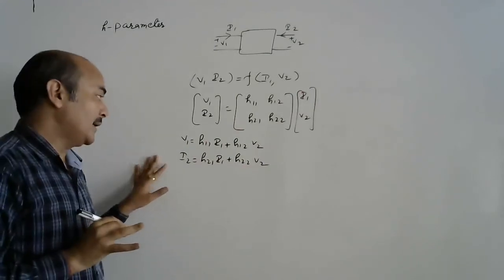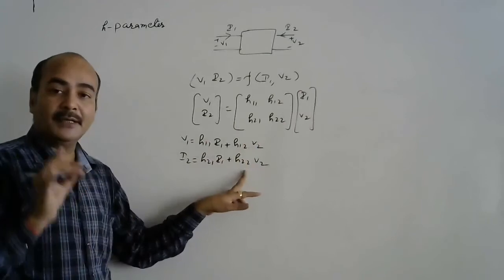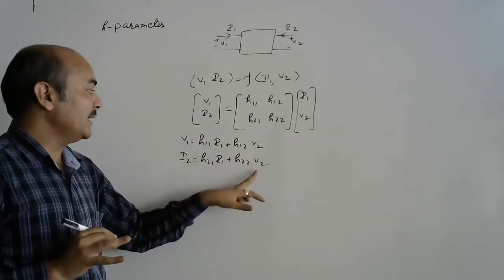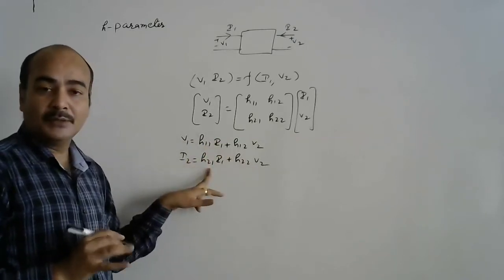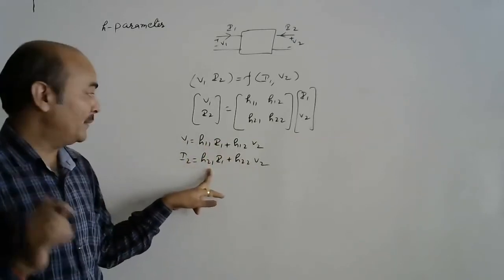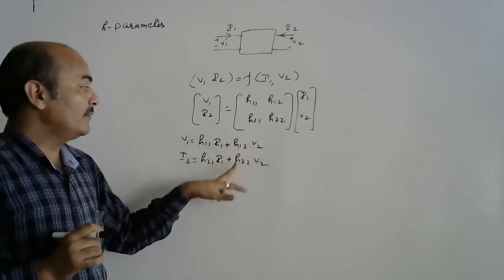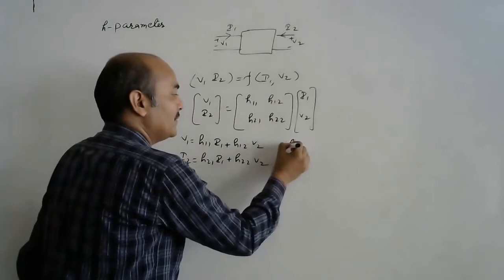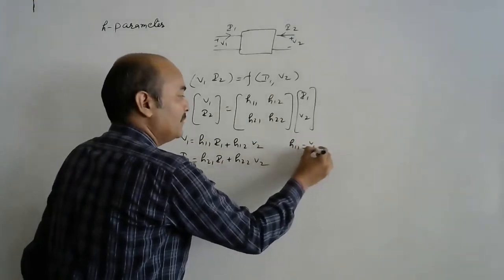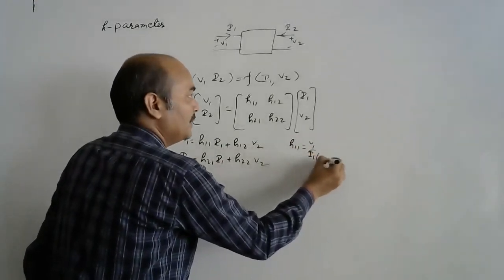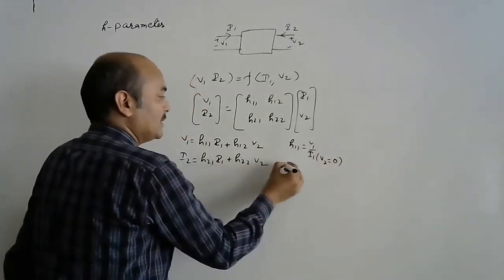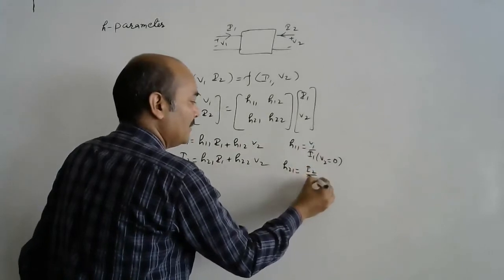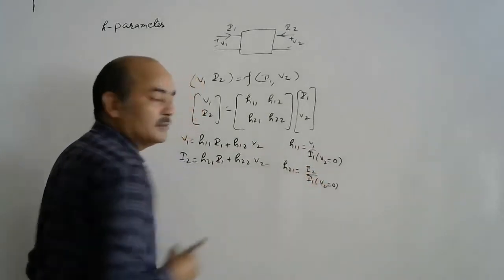To find the parameters, first set V2 = 0 (output short circuit) to calculate H11 and H21. Then set I1 = 0 (input open circuit) to calculate H12 and H22. H11 is defined as V1/I1 with V2 = 0, and H21 is defined as I2/I1 with V2 = 0.